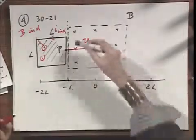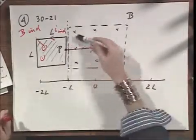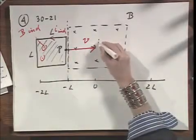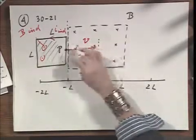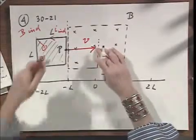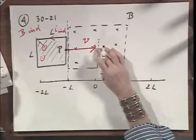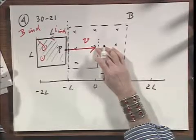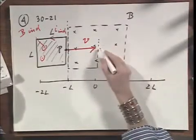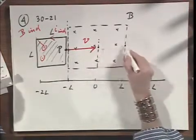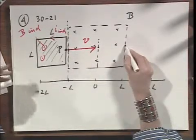Once the loop is completely inside, that means once point P reaches zero, there is no longer any flux change, and so there is no longer any induced current. And the current will stop once it reaches this point. And all the way from here to here, P being here to here, the magnetic flux will not change.